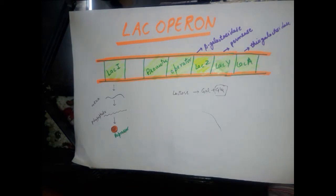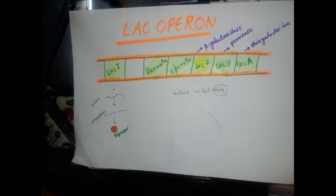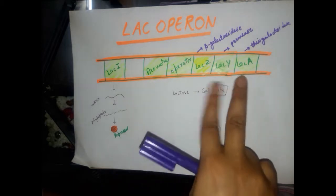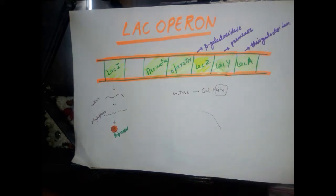Beta-galactosidase cleaves the bond between galactose and glucose in lactose, ultimately releasing glucose for the cell to metabolize. Permease is a membrane-bound enzyme that moves to the cell surface and allows excess lactose from the surrounding media to enter the cell, to be used by the bacteria as an energy source. Thiogalactosidase is responsible for the degradation of unwanted material that might enter along with the lactose via permease.